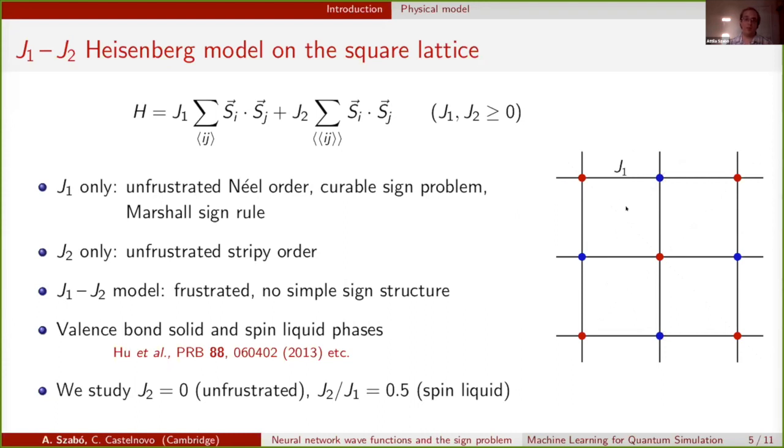This model is unfrustrated because the lattice is bipartite, and we end up with a Néel order represented by the checkerboard pattern. What we know about unfrustrated antiferromagnets is that we can cure the sign problem by imposing the so-called Marshall sign rule, which again has this same kind of checkerboard pattern.